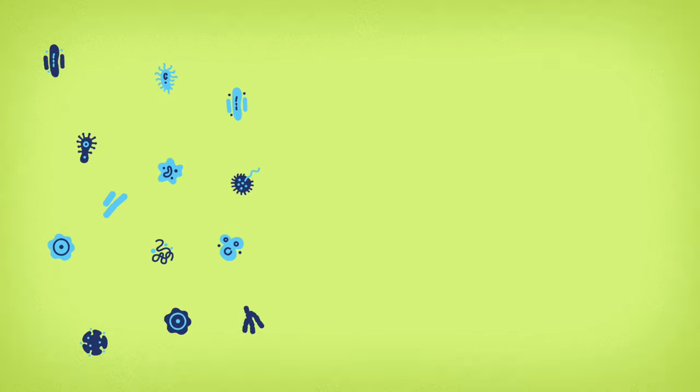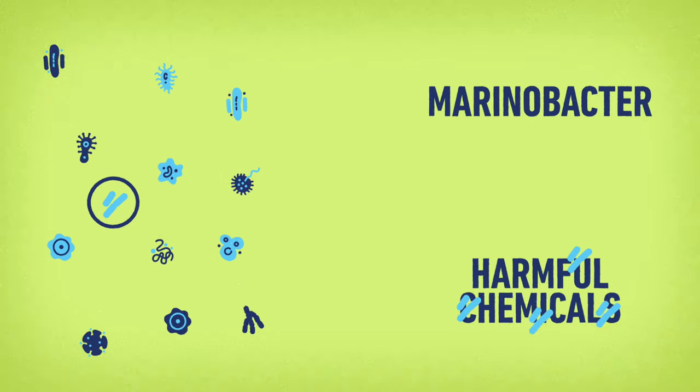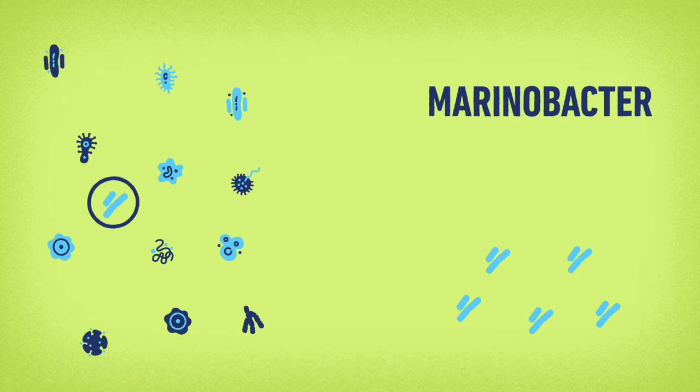So how can microbes be used to prevent the damage caused? Well, certain microorganisms like merinobacter are known to break down the harmful chemicals into safer, non-toxic compounds.